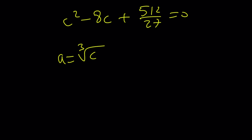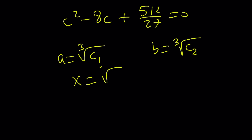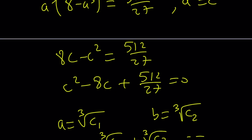This is the beauty of the cubic formula — it reduces the power and gives you a quadratic, which is very easy to solve. You solve for c, and c is equal to a³ or b³. From there, you can find a by taking the cube root of c. There are two values. Let's say b is going to be the other cube root of c — call this c₁ and c₂. It doesn't matter, because x is just going to be their sum.